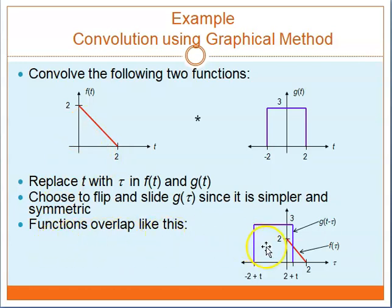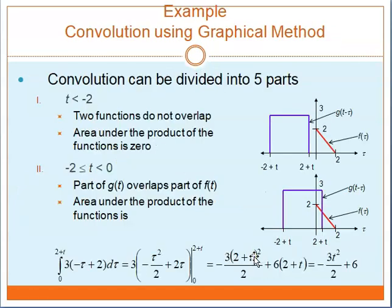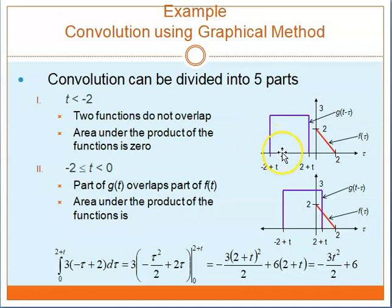The functions will overlap like this. You have Ftau over here which will not move, and then you have Gt minus tau which has been flipped and we are going to slide it. The convolution can be divided into five parts. The first part is when T is less than minus 2 — the two functions do not overlap, so the area is equal to 0.